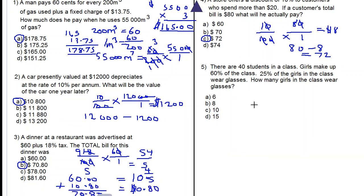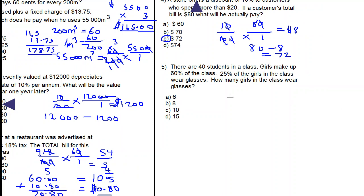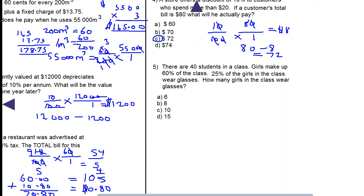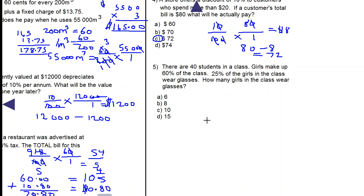There are 40 students in a class. Girls make up 60% of the class. 25% of the girls in the class wear glasses. How many girls in the class wear glasses? So let's find out how many girls we have in the class. 60% of the 40 are girls. Let's cancel zeros. We will get six fours are 24. So there are 24 girls in this class.